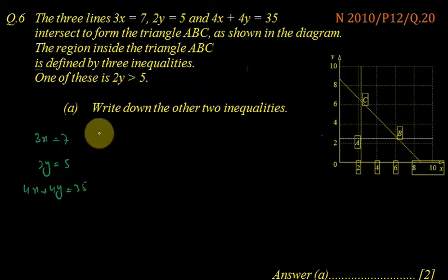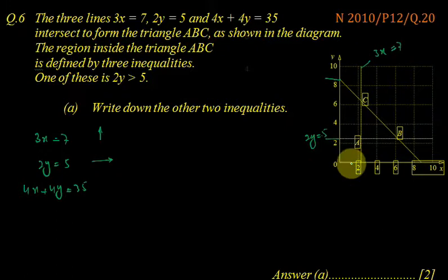This equation must be of the line vertical because only the x is there and it must cut the x axis. Only variable y is there, so it must be a horizontal line because it cuts the y axis. Similarly, the third one remaining must be the equation of this. So this one must be 3x equals 7 and it must be 2y equals 5, and the remaining one is 4x plus 4y equals 35, the equation of this line.